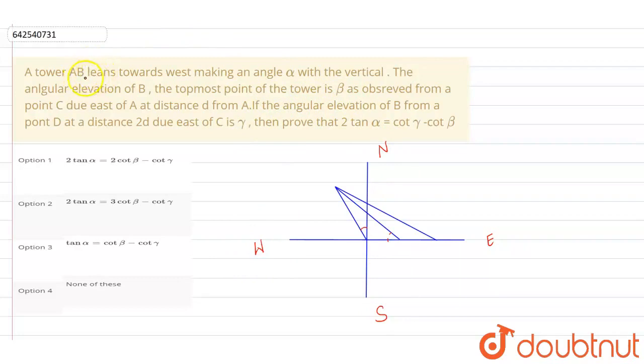So they are saying there is a tower AB. Let this be the tower AB. Let this point be A and this point be B. This is representing a tower and it is making an angle alpha with the vertical. So let this angle be alpha.